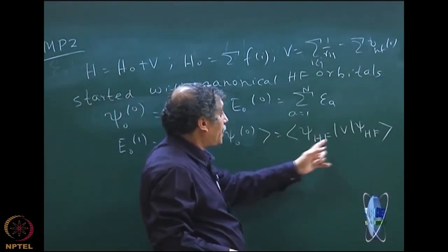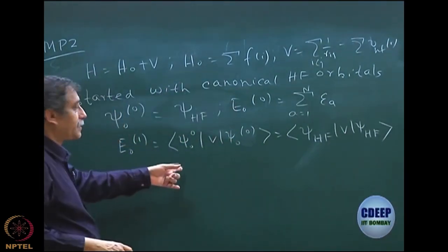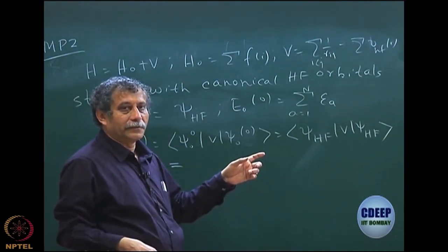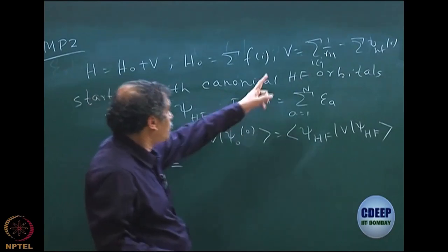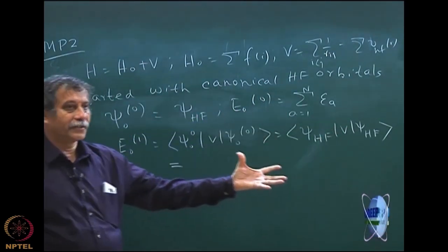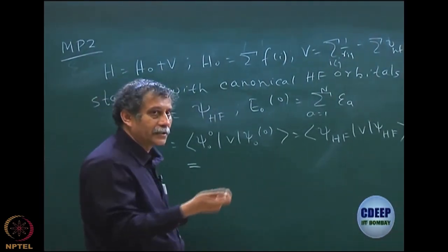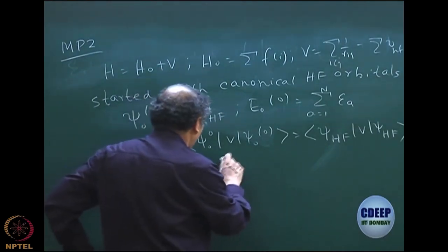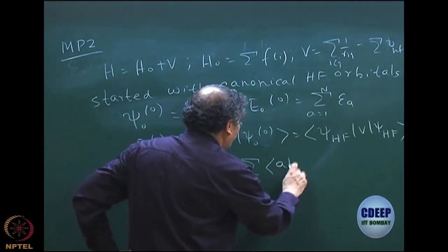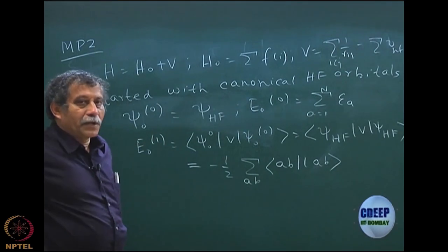If I apply Slater rules to compute E⁰₁, which is ⟨ψ⁰₀|V|ψ⁰₀⟩ = ⟨ψ_HF|V|ψ_HF⟩, the value in terms of spin orbitals is minus one-half, summed over all A, B, of the antisymmetrized integral ⟨AB‖AB⟩, where these are the spin orbitals.